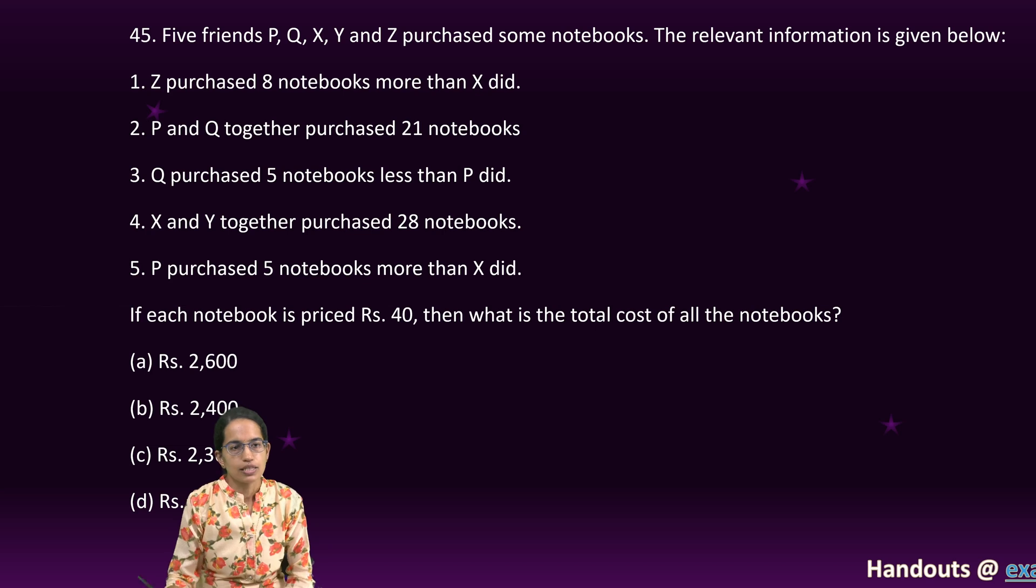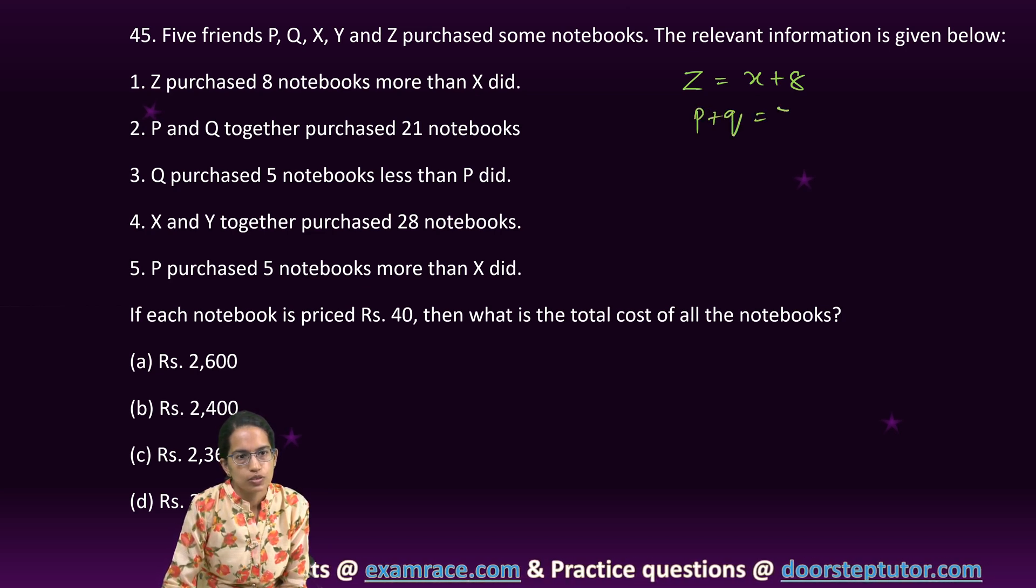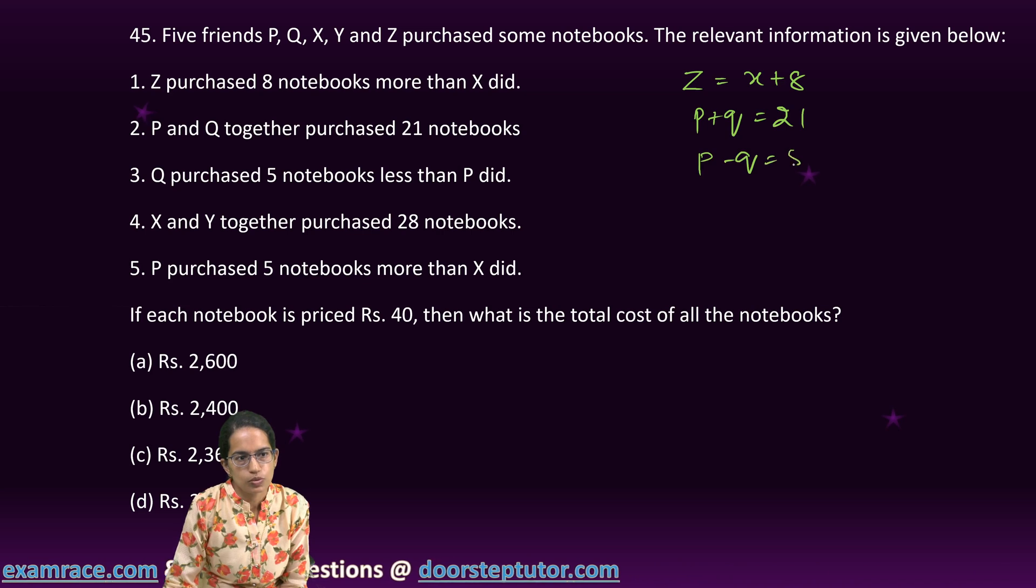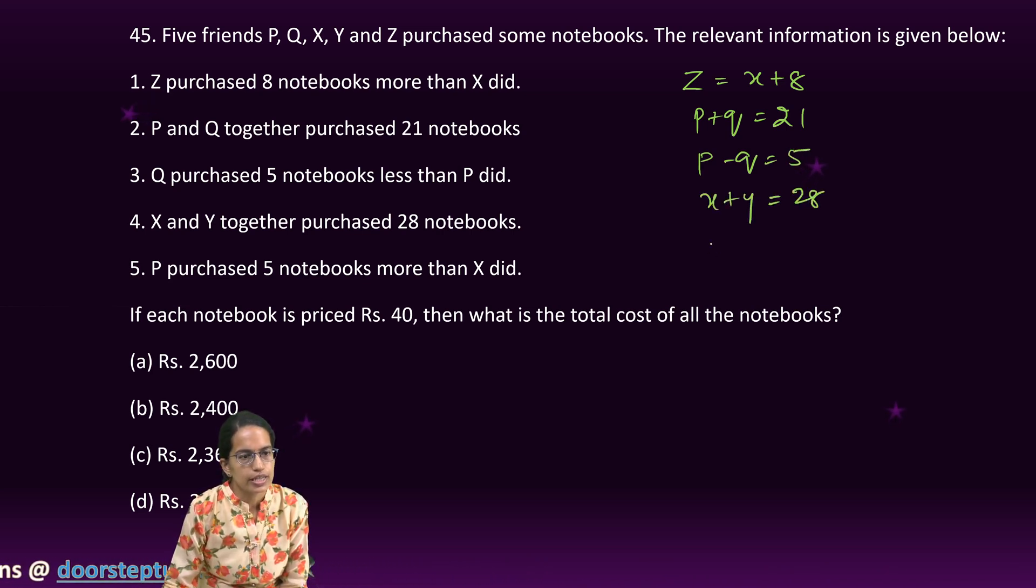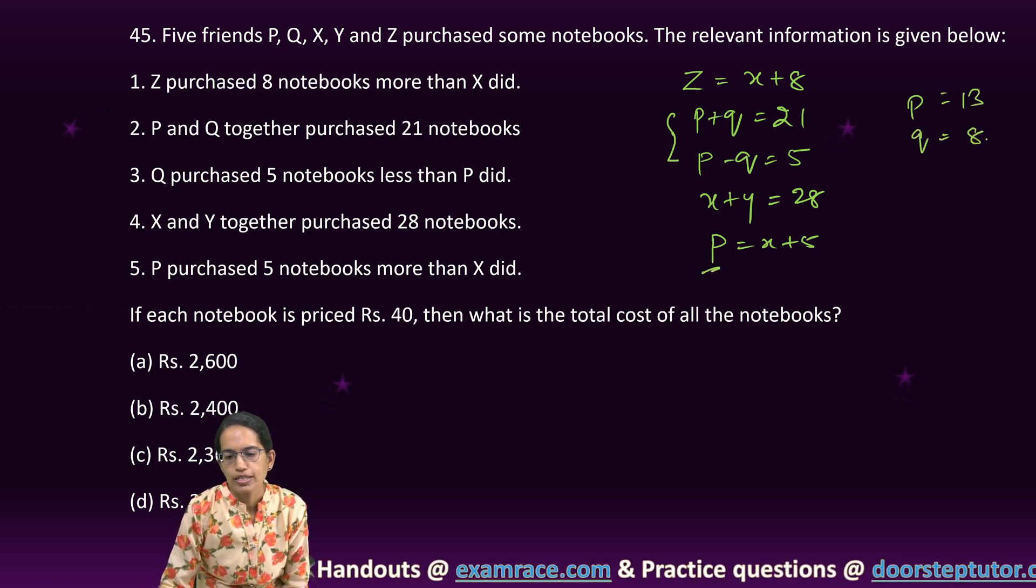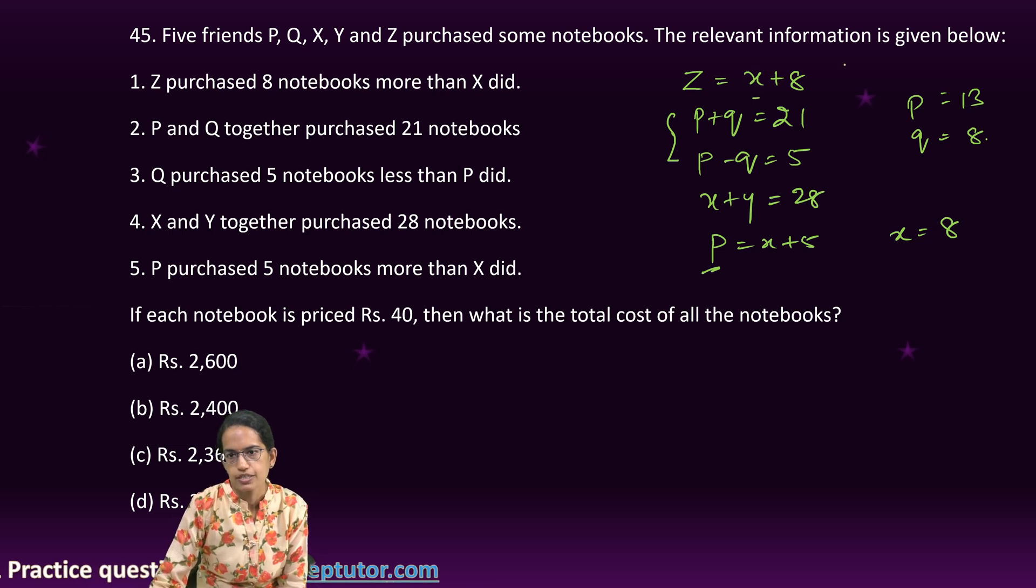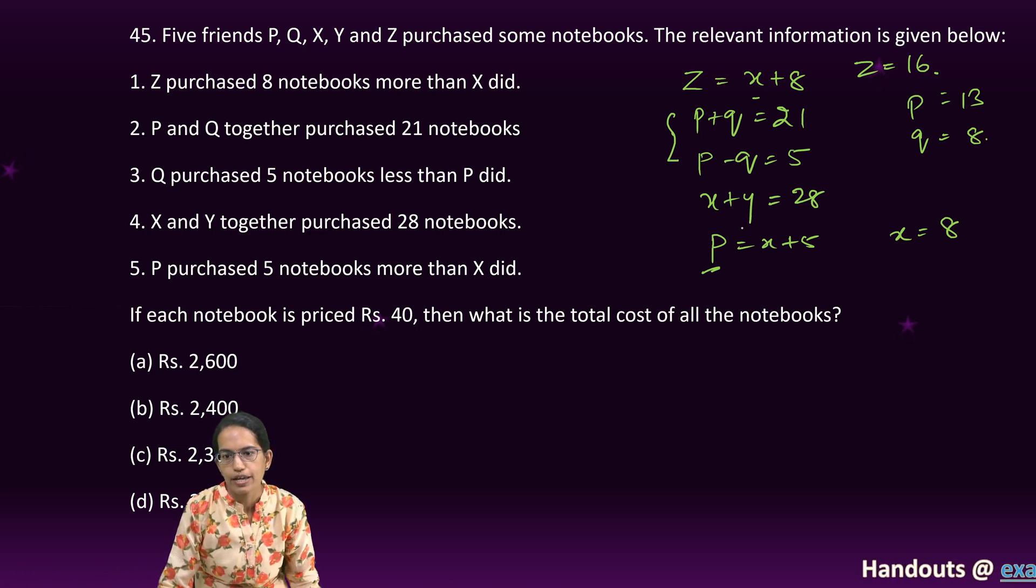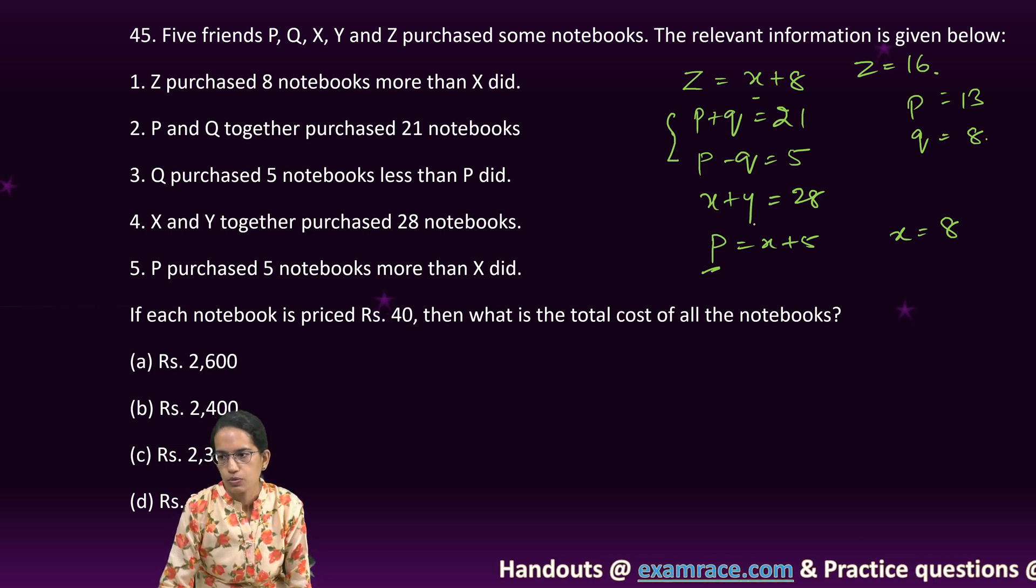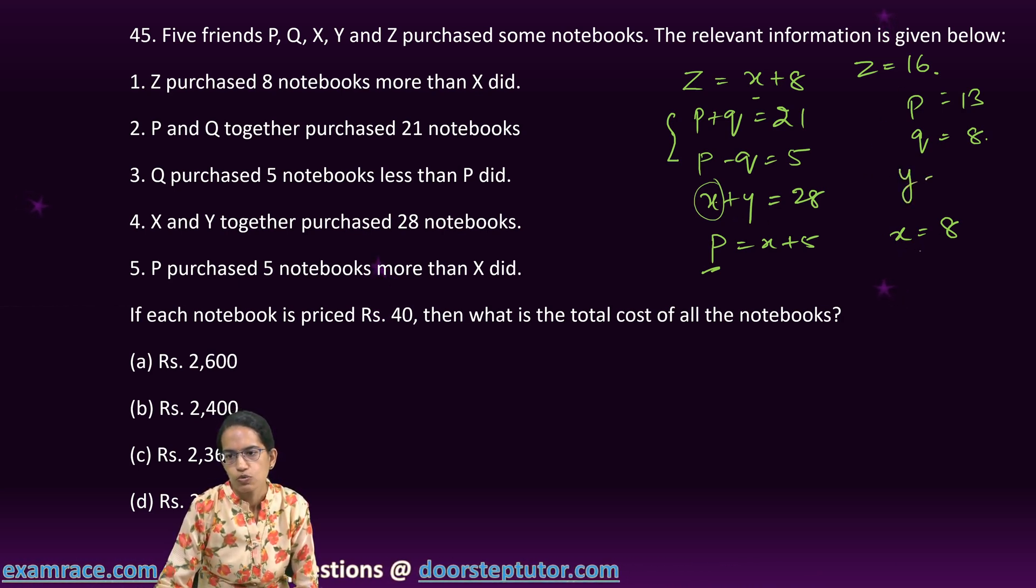The next question is a simple question. I'll just convert it into equation. So z is equal to x plus 8, p plus q is equal to 21, p minus q is equal to 5, x plus y is equal to 28 and p is equal to x plus 5. I solve these two equations. So these two equations I get the value of p and q. So my values of p is 13 and q is 8. Now I substitute p here with 13. So I get x is 8. I substitute x 8 here. So I get z as 16.